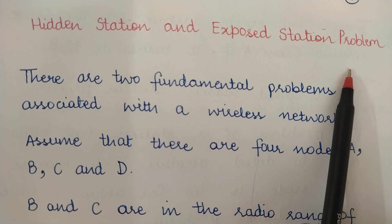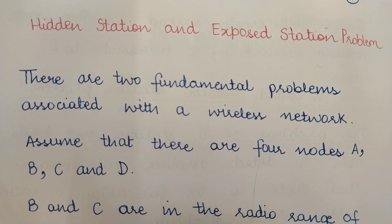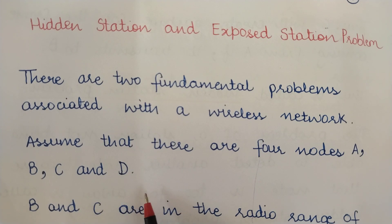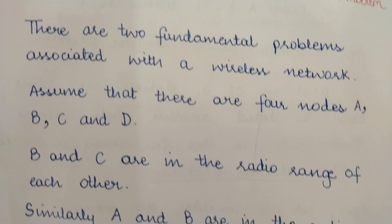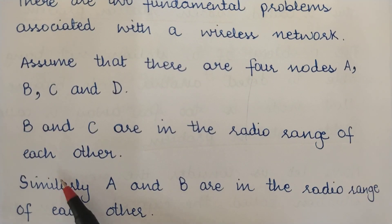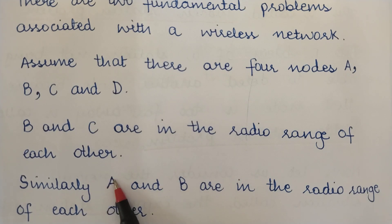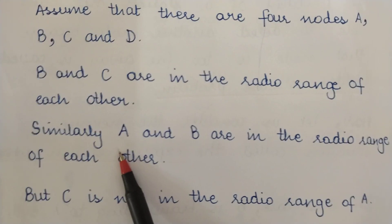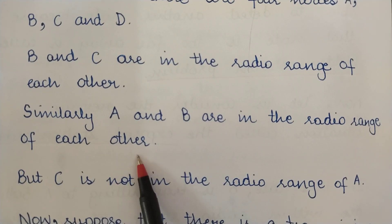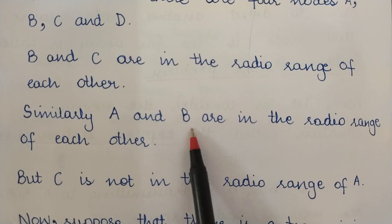Let's see what these hidden station and exposed station problems are. Assume that there are four nodes A, B, C, and D. If B and C are in the radio range of each other, that means B and C can listen to each other and exchange data. Similarly, A and B are in the radio range of each other, meaning both A and B can communicate with each other.